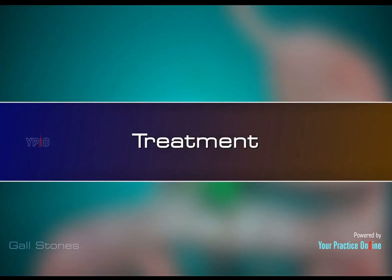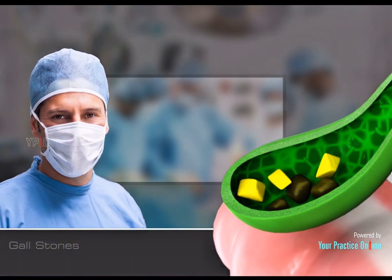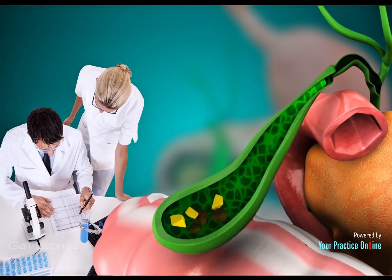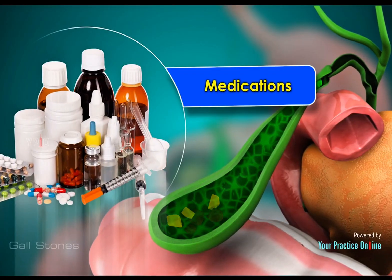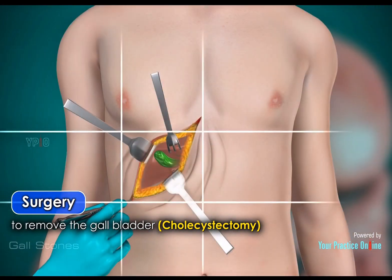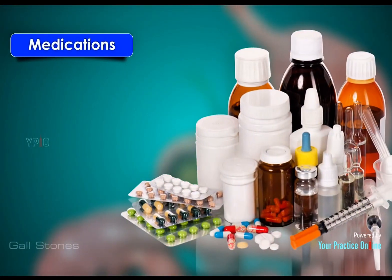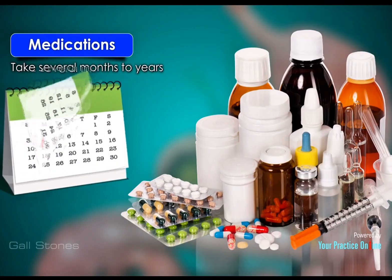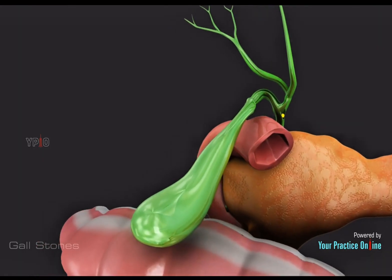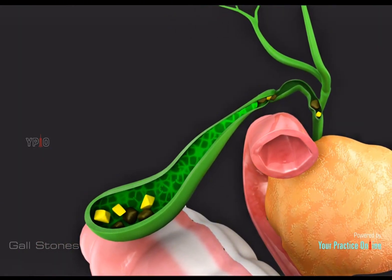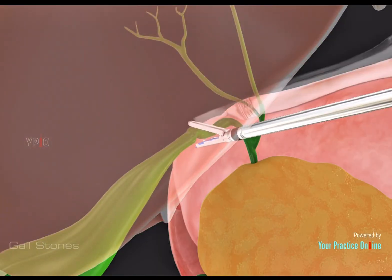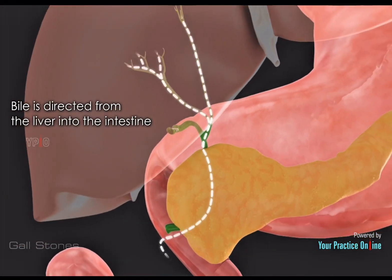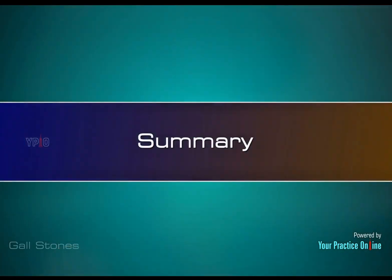Gallstones without symptoms do not require treatment. Treatment for symptomatic gallstones and its complications includes medications to dissolve the gallstones and surgery to remove the gallbladder (cholecystectomy). Medications can help dissolve gallstones but may take several months to years, so this option is reserved only for patients contraindicated to surgery. The surgical removal of the gallbladder does not cause any serious problems as it is not necessary for life. Surgery is also recommended as gallstones can reoccur. Once the gallbladder is removed, bile is directed from the liver into the intestine.